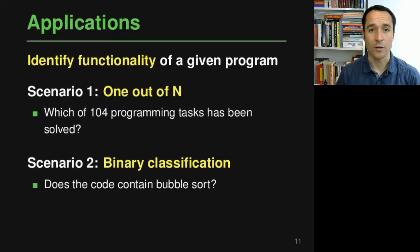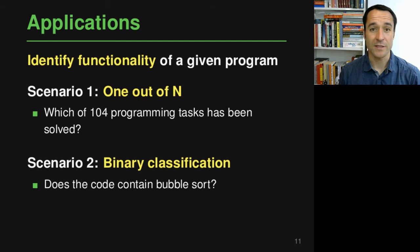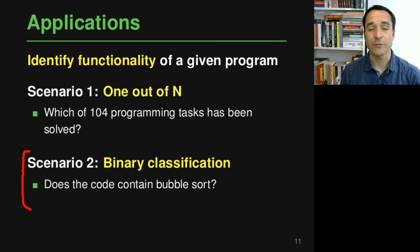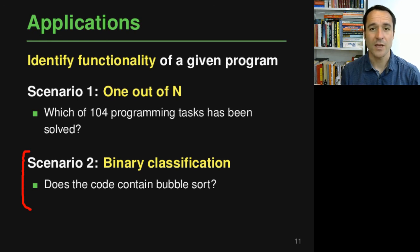Now you've seen the overall architecture. The authors apply it to identify the functionality of a given program in two scenarios. The first is a one-out-of-N scenario: there are 104 different programming tasks and you don't know which one the code solves — you need to classify it as one of the 104. The second is binary classification: for example, determining whether a given piece of code is an implementation of bubble sort or something else.